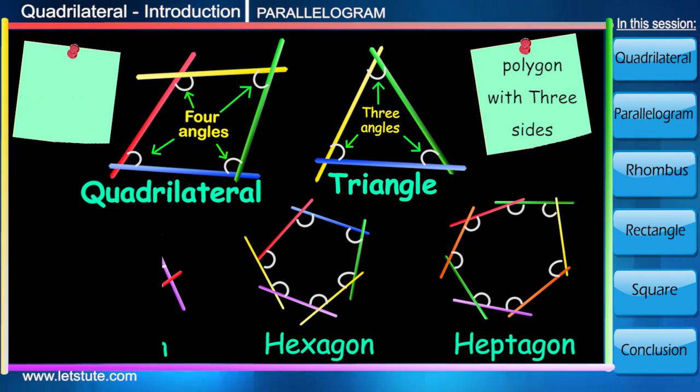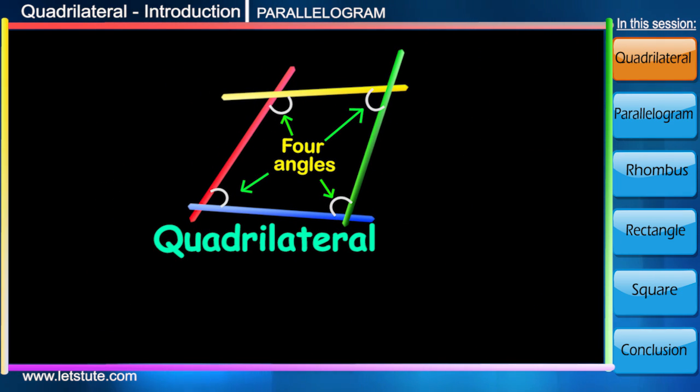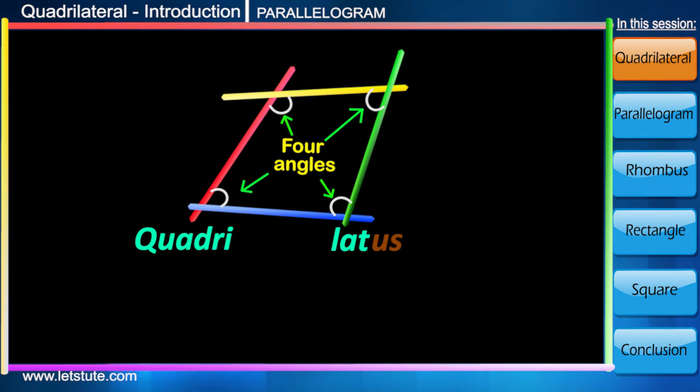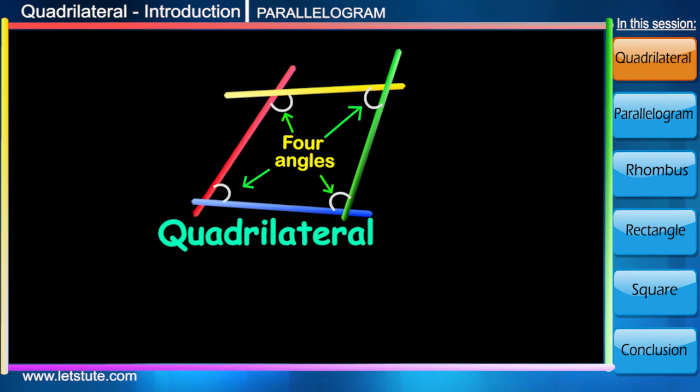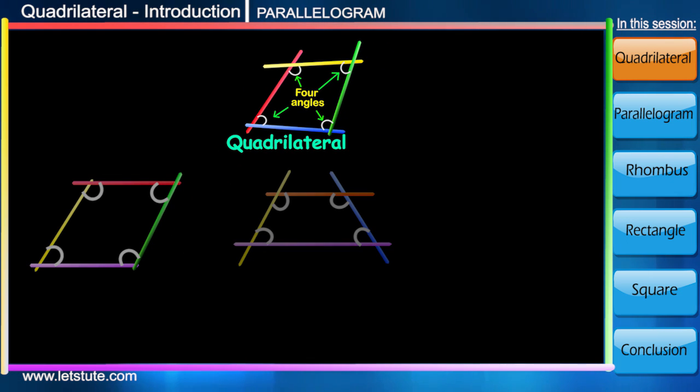Friends, we are familiar with triangles, so let's move a step ahead and learn something about a quadrilateral. Quadrilateral is from two Latin words: 'quadri' and 'lateral,' where 'quadri' means four and 'lateral' means sides.